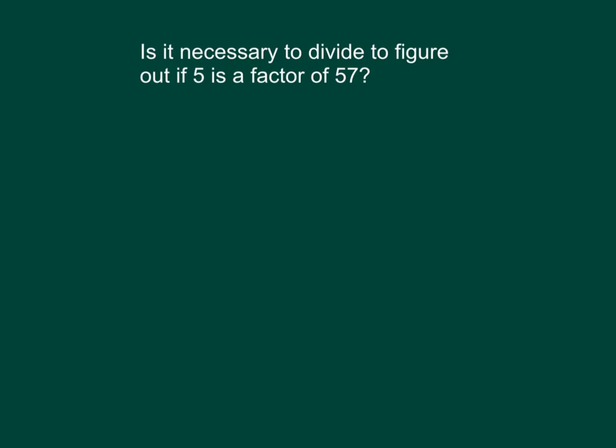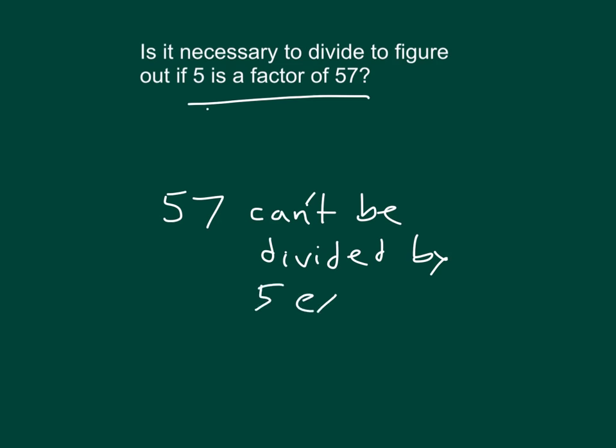Think about this problem here. Is it necessary to divide to figure out if 5 is a factor of 57? What do we know about 57? Can it be divided by 5 exactly? It can't be divided by 5 exactly. What must it end in to show that it would be divisible by 5? That is, what number would be in the ones place? Right, it would have to end with a 0 or a 5. So it's not even necessary to divide to figure out if 5 is a factor of 57. We know that it is not.